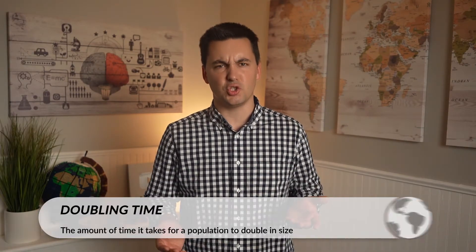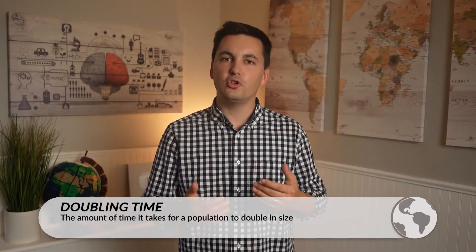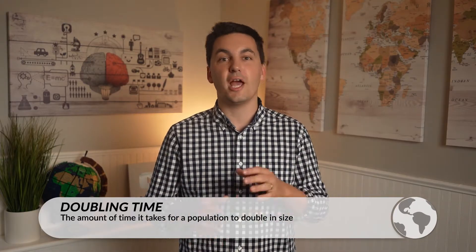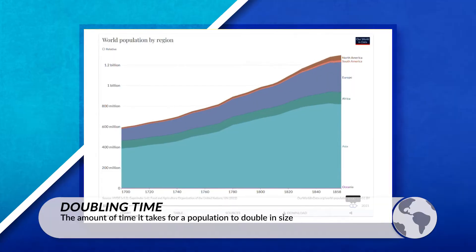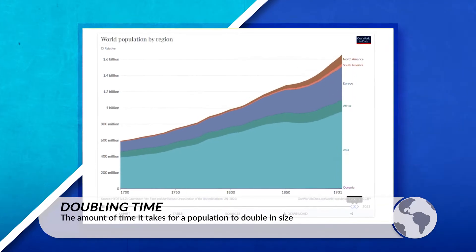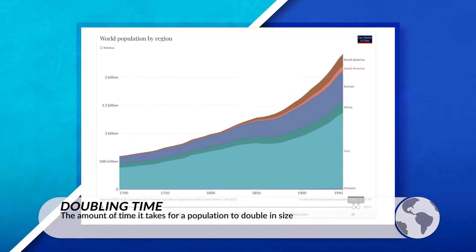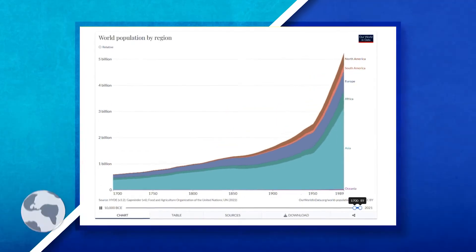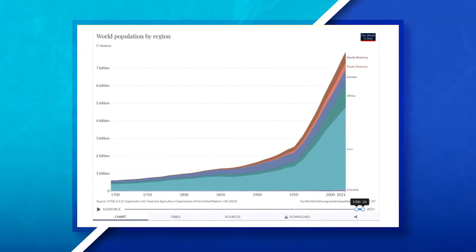So just because a society has a negative NIR, it may not mean that the population is shrinking. Countries that have a high NIR will take less time to double their population, which could put a strain on the country's infrastructure and systems. Traditionally, we can see that areas with less economic development often have a higher natural increase rate.